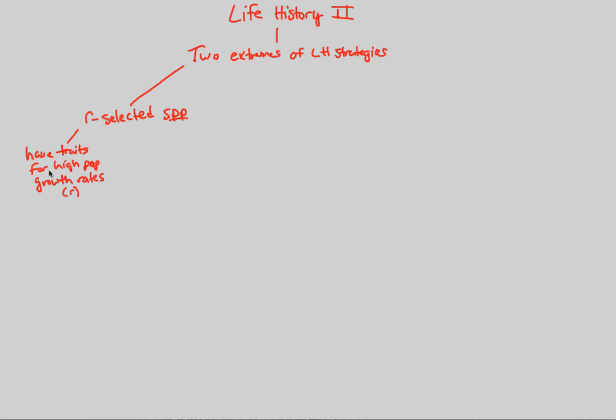What do I mean by these traits? Simple traits that usually denote an R-selected species could be like small body size. This is one life history trait that really shows this is probably an R-selected species. Why small body size? Usually this is hand in hand with the idea that less energy is necessary for this organism to survive.